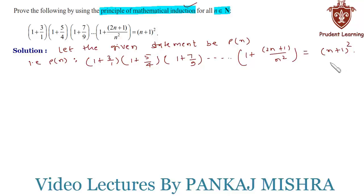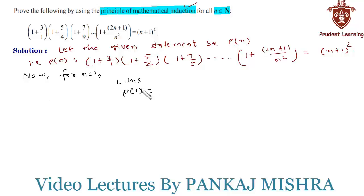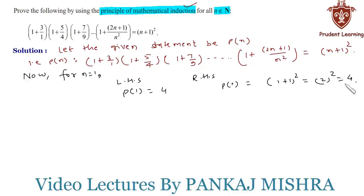In our first step, we'll verify whether the given equation holds true for n = 1. For n = 1, on the left hand side P(1) = 1 + 3/1 = 4, whereas on the right hand side P(1) = (1+1)² = 2² = 4. Since LHS equals RHS, P(1) is true.